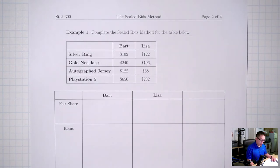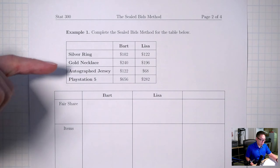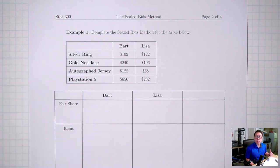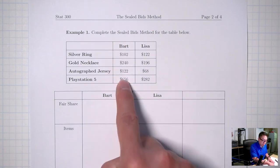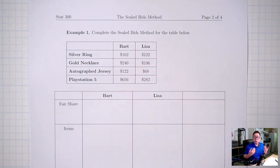Example one. Bart and Lisa are sharing a silver ring, gold necklace, autographed jersey, and a PlayStation 5. Bart and Lisa have already bid on the items. These are Bart's values and these are Lisa's values. Let's go through the sealed bids process for Bart and Lisa.